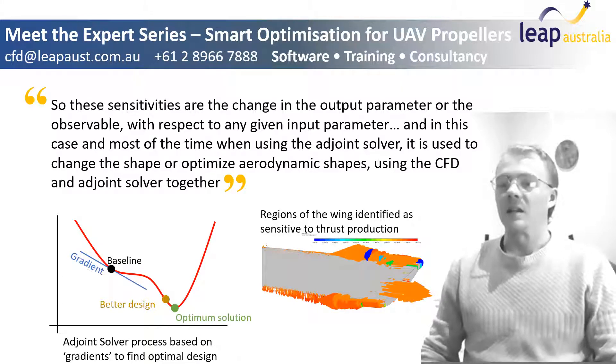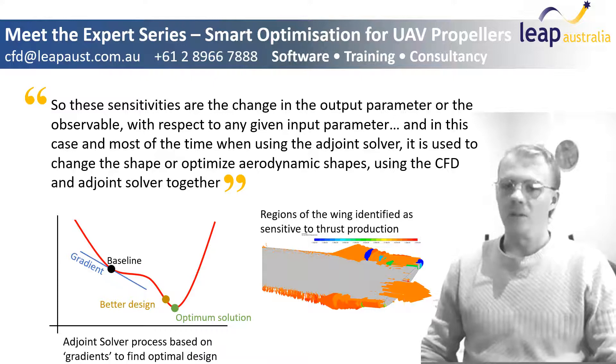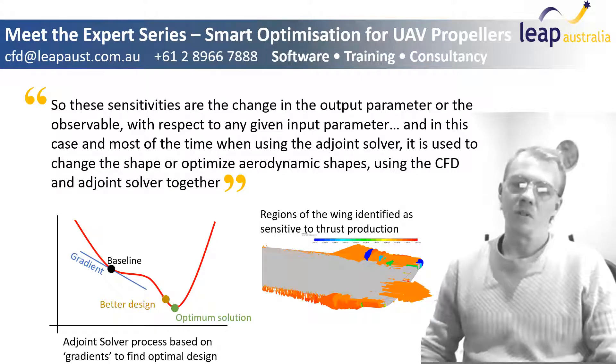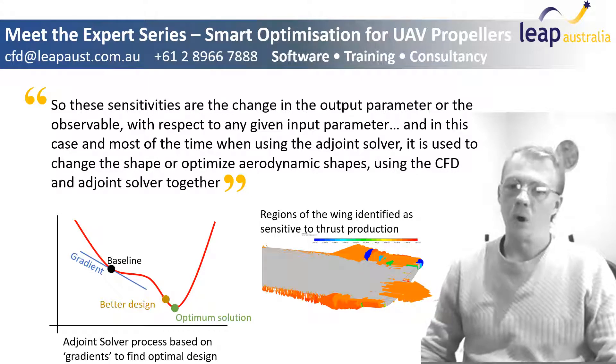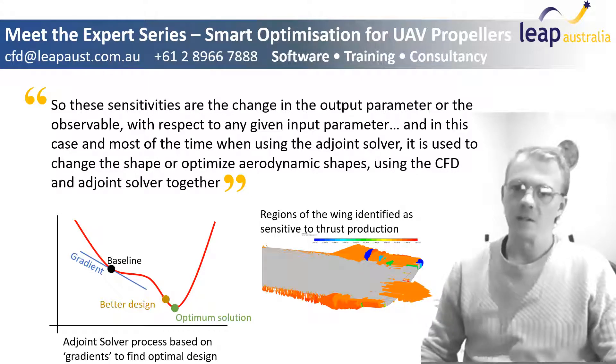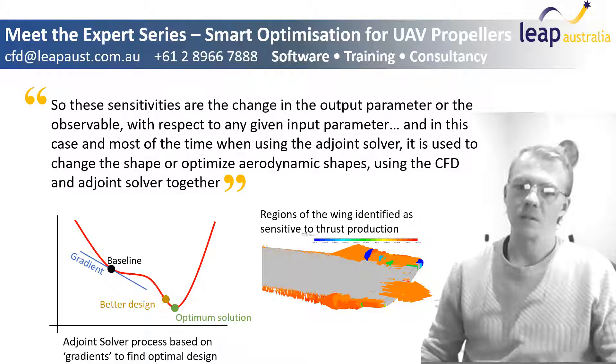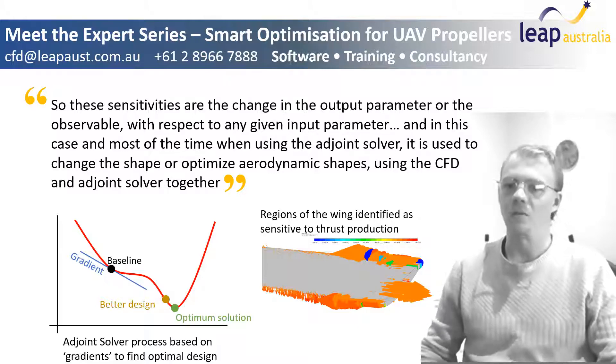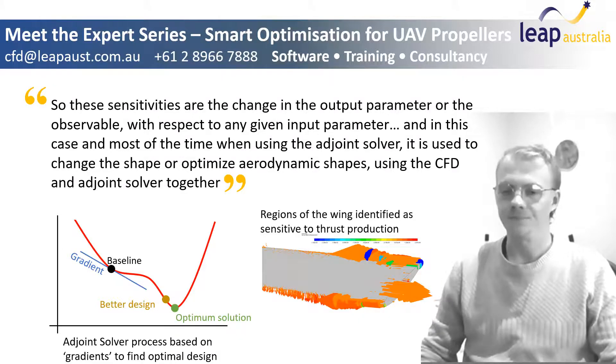In this case, and most of the time when using the adjoint solver, it is used to change the shape or optimize aerodynamic shapes using the CFD and adjoint solvers together.